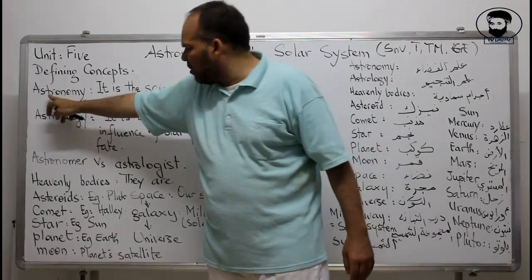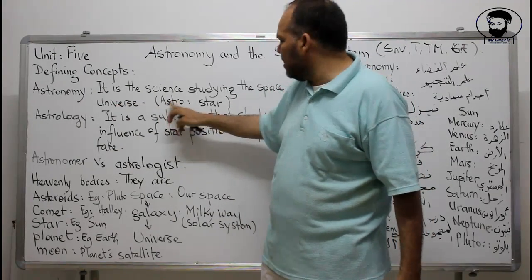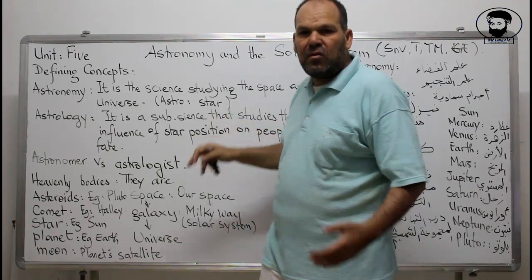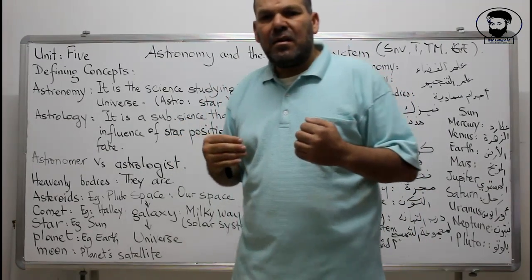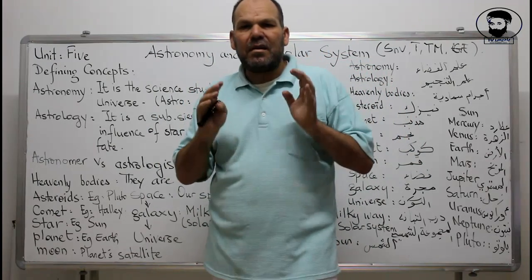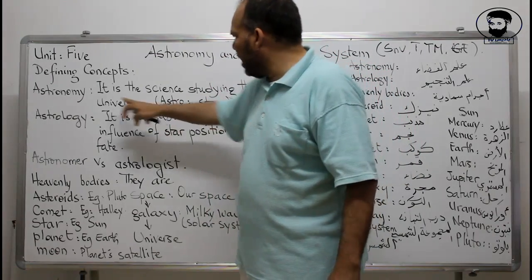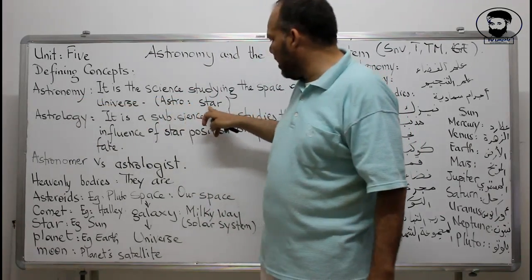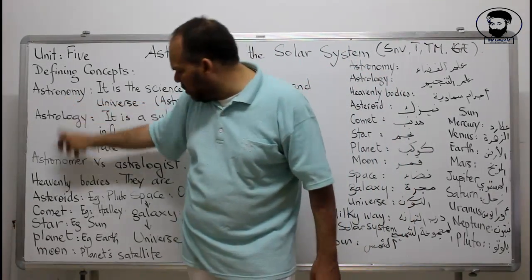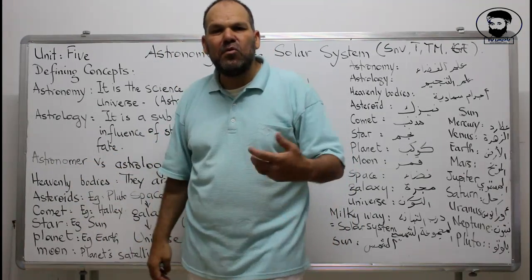The word 'Astro' in the word Astronomy is a Greek word which means a star — the study of stars. So in the past, for the Greeks, it was just looking at the stars in the sky. For them, Astronomy was a person who studies the stars. The person who studies Astronomy is called an Astronomer — a person who studies, describes, and investigates what is in the space and in the universe.